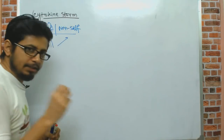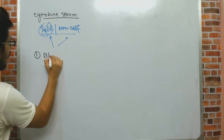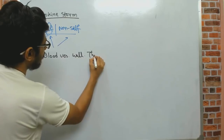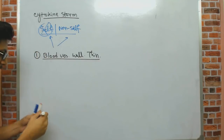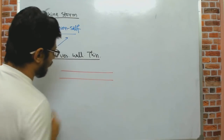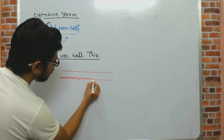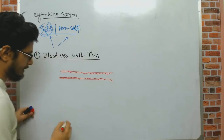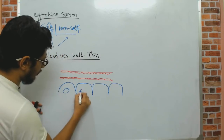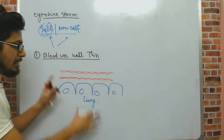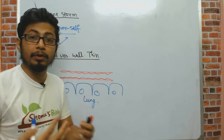There are two major changes cytokine storm causes. First, it makes blood vessel walls very thin — highly permeable. For example, a blood vessel supplying blood to lung cells has walls made up of cells joined together. Normally, blood flows through this vessel so that lung cells can work properly and we can breathe. Without oxygen, a healthy person can only survive about four minutes.